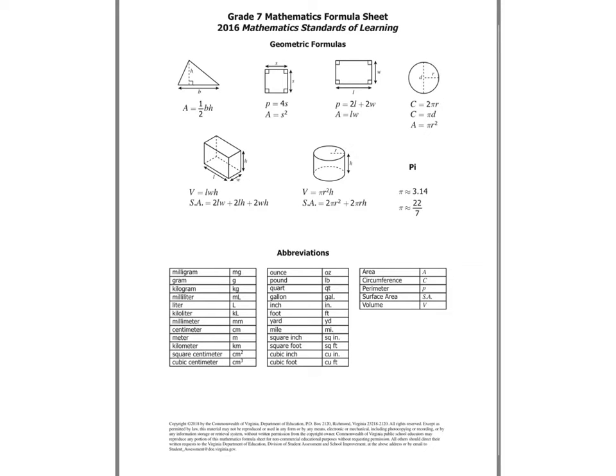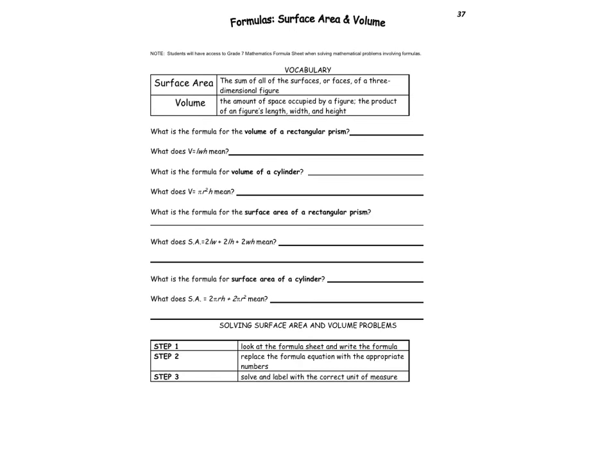All right, so today we're going to be talking about volume and surface area. You'll be using these formulas here. This is for the rectangular prism and then here's for the cylinder. Don't forget for pi we use 3.14. Turn to page 37 in your packets, take your formula sheet out, and go ahead and fill in this page.